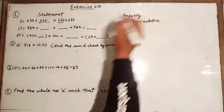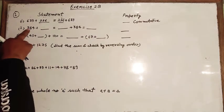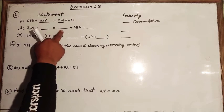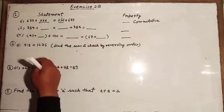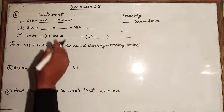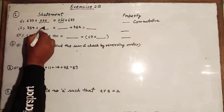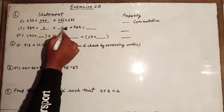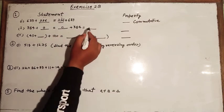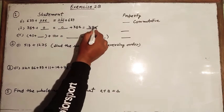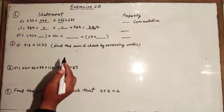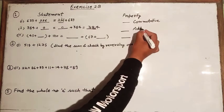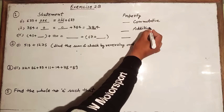The second one: what plus 384 equals 384. We know that if we add zero to 384, it remains 384. So the property here is additive identity, also called the additive property.